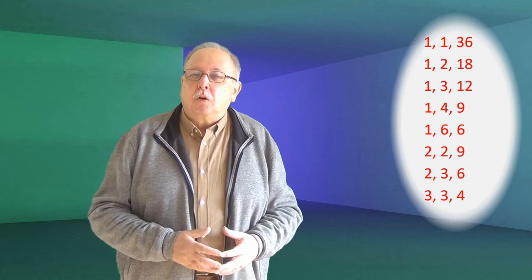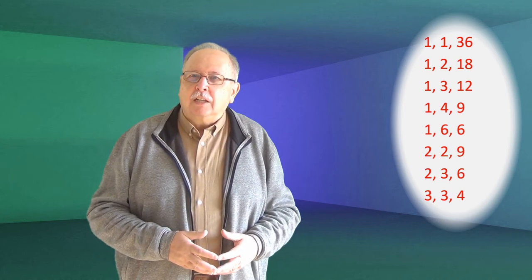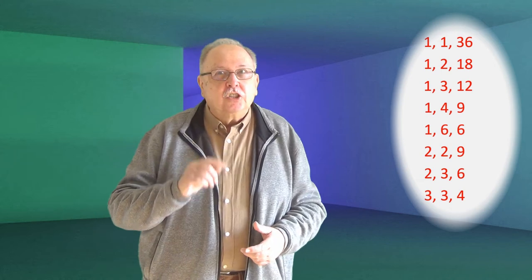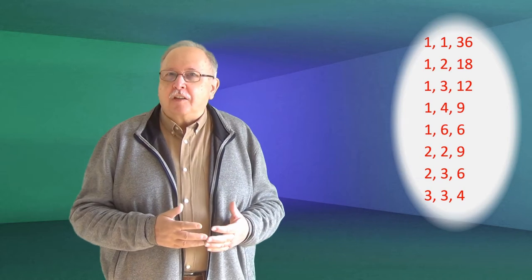Acum a sosit momentul să folosim prima informație, aparent irrelevantă. Suma vârstelor este numărul de casă al părinților profesorului de matematică. Pare informația irrelevantă pentru că noi nu cunoaștem numărul respectiv, dar veți vede imediat că acum această informație devine importantă și ne spune ceva. Deci noi nu știm care este numărul de casă, dar știm altceva, că profesorul îl știe. Dacă nu l-ar fi știut, ar fi spus acest lucru când a aflat că suma vârstelor este egală cu numărul de casă.